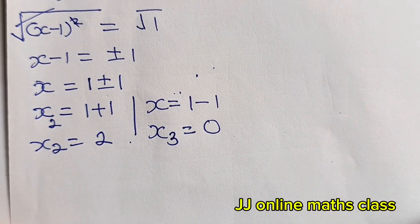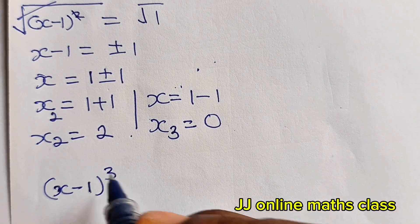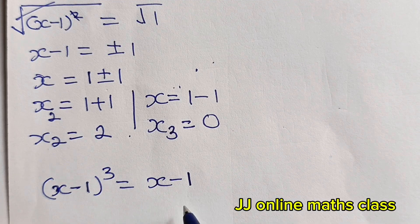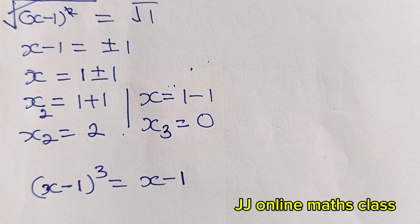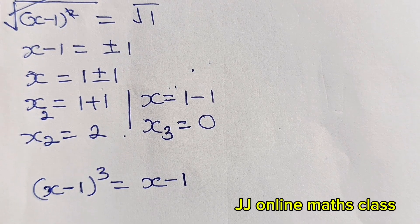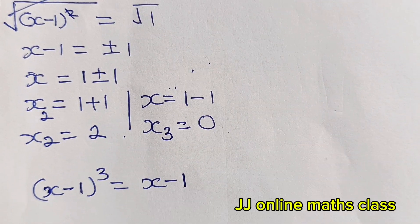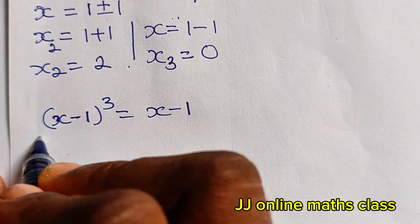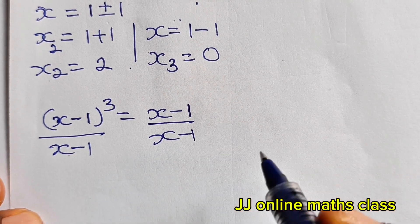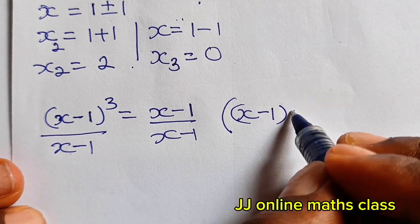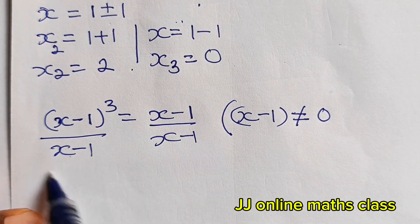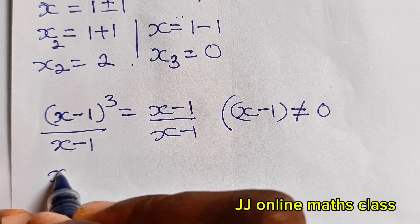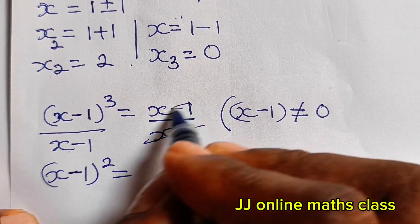Now let's go back to the main method. We are asked to solve (x-1)³ = (x-1). What if we divide both sides by (x-1)? We can do that, but with the condition that x - 1 must not equal 0. Dividing both sides by (x-1), we get (x-1)² = 1.